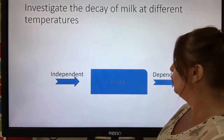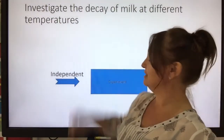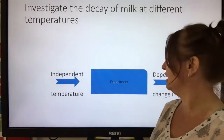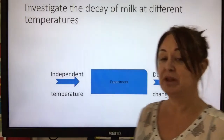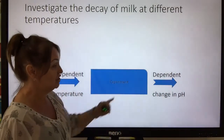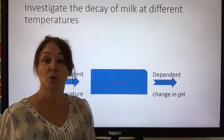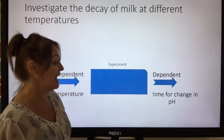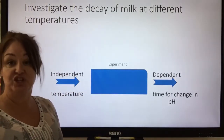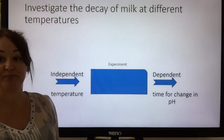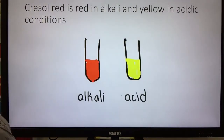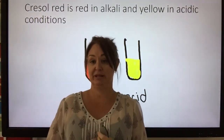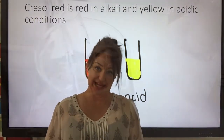We're going to investigate the decay of milk at different temperatures, but we need to be clear about our independent and dependent variables. If we're changing the temperature, the temperature is what we're controlling, so that's our independent variable. We're going to measure the change in pH over time, so our dependent variable is actually the time for the change in pH.